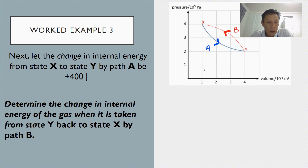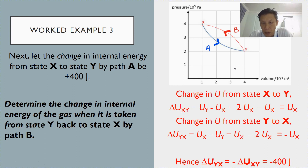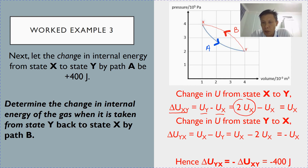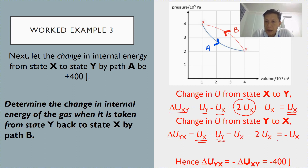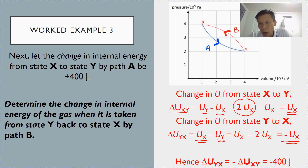To calculate the change in internal energy for path B, we take the final state minus the initial state. The change in internal energy from x to y through path A is: final (uy = 2ux) minus initial (ux), giving ux. For path B, the change in internal energy from y to x is: final (ux) minus initial (uy), giving minus ux. Therefore, the change in internal energy for process B is equal to the negative of process A. Since process A is positive 400 J, process B must be minus 400 joules.